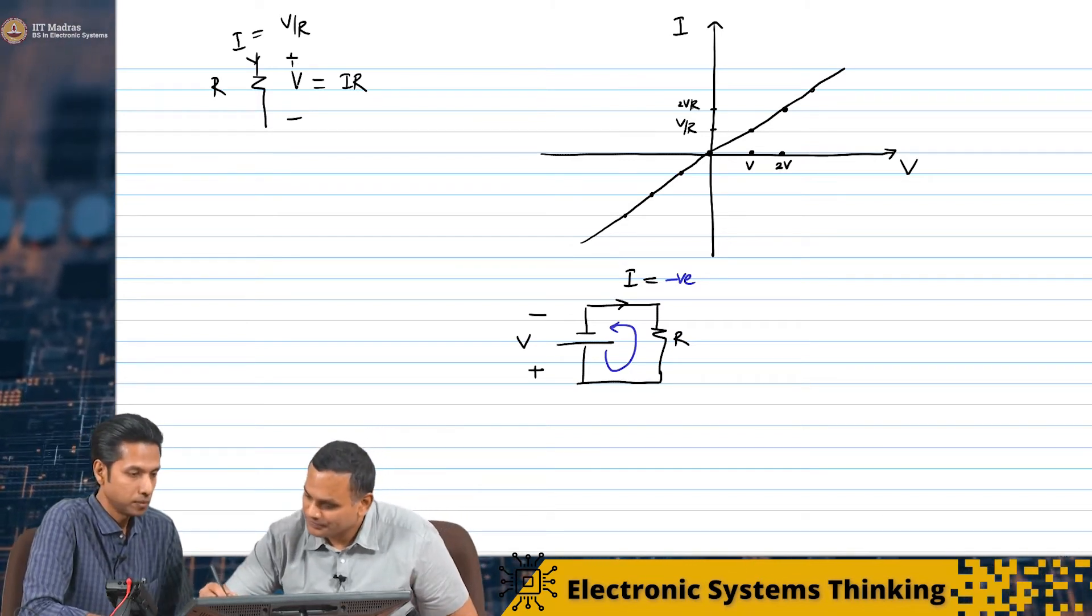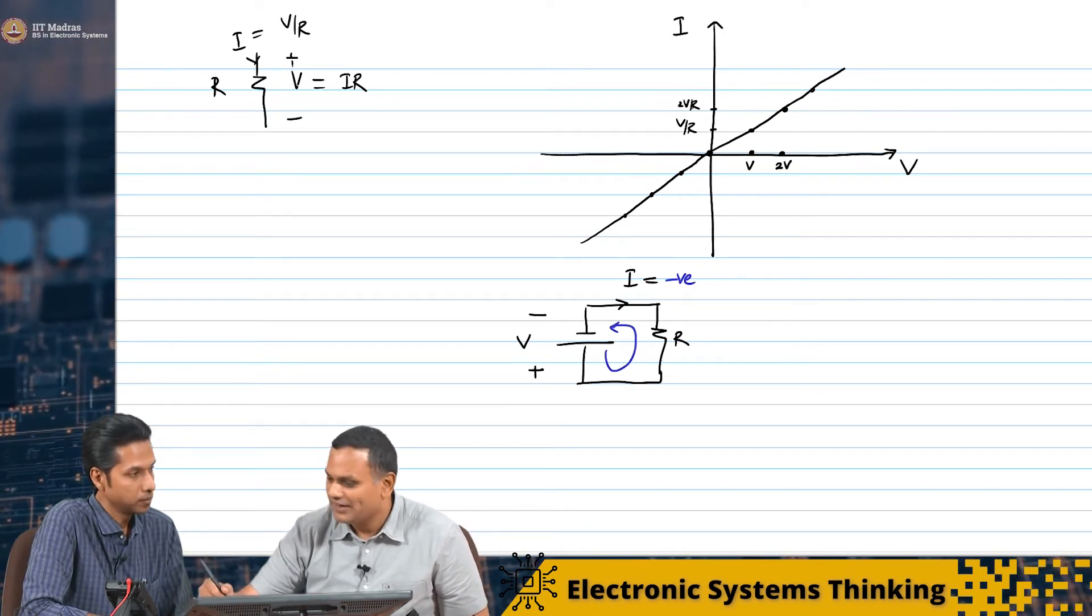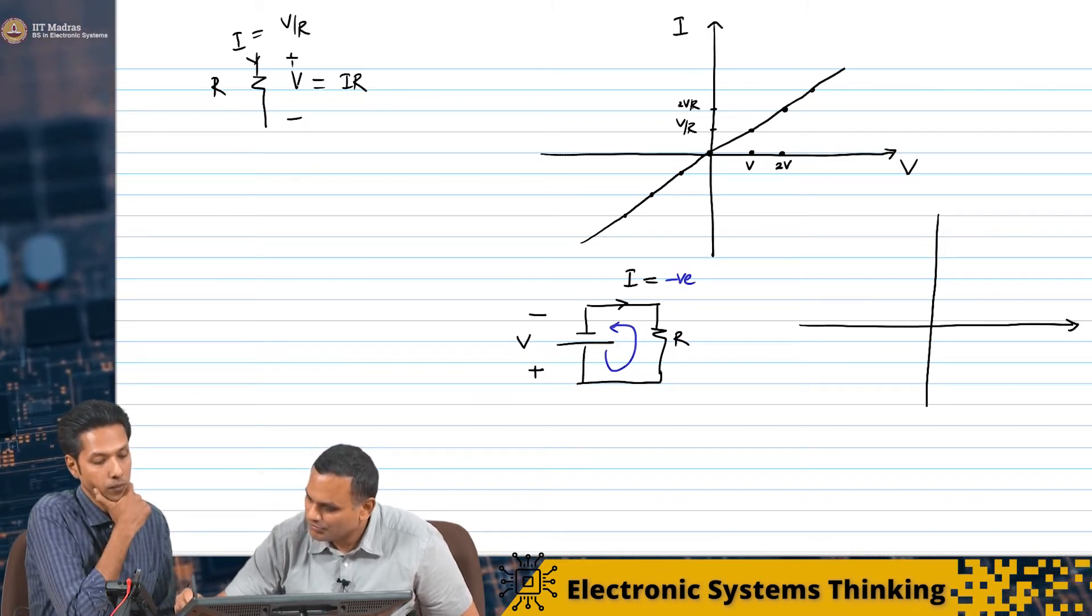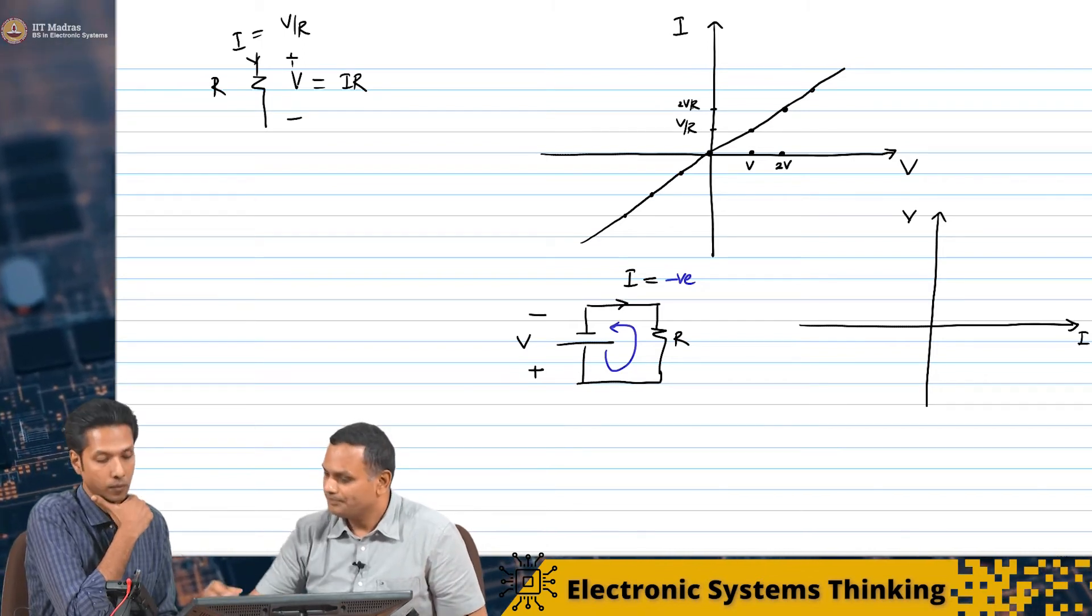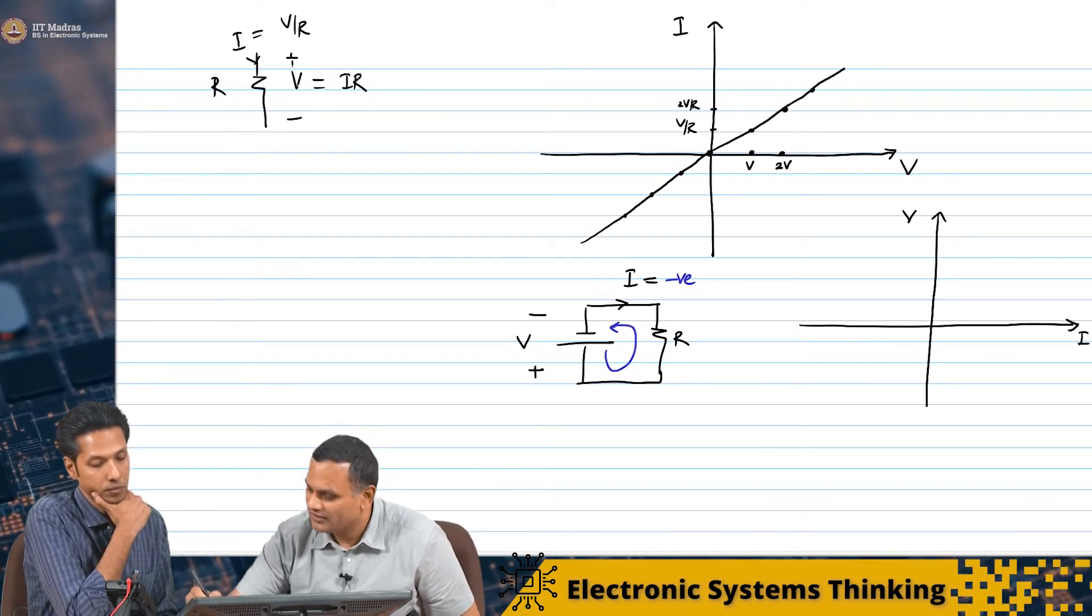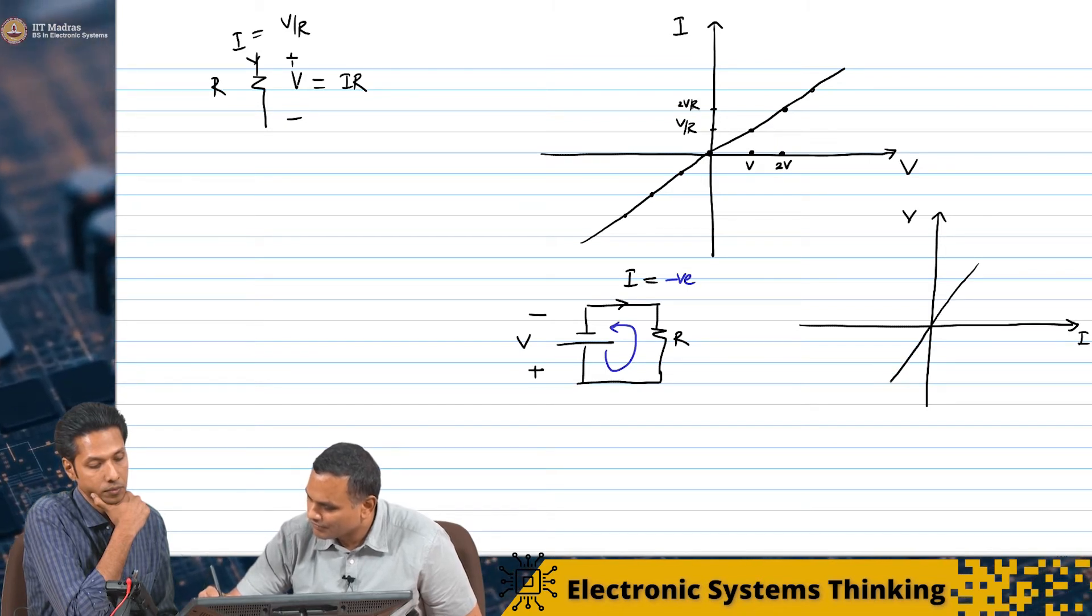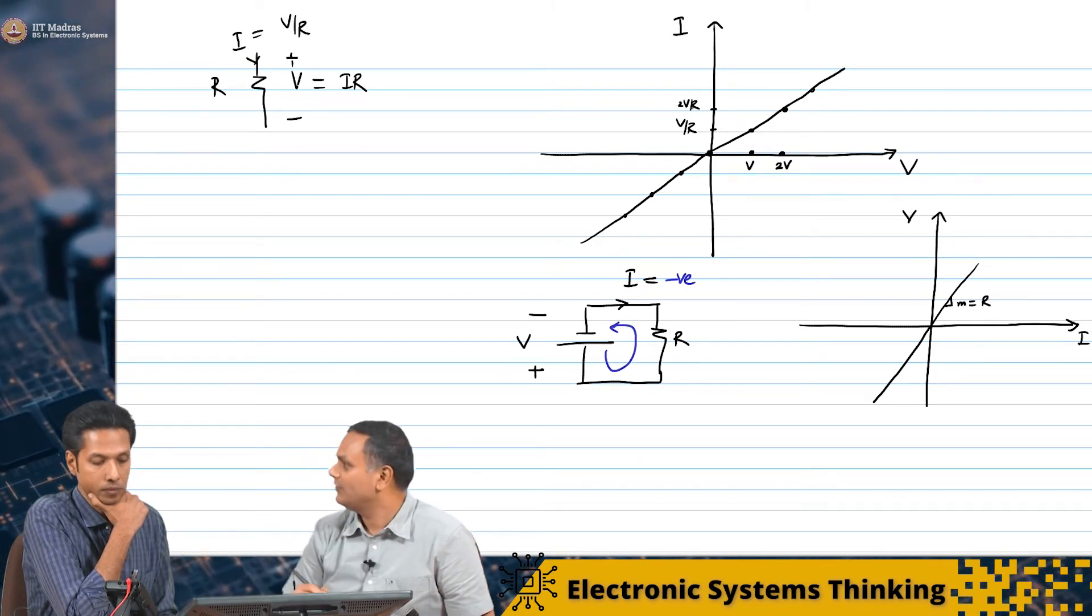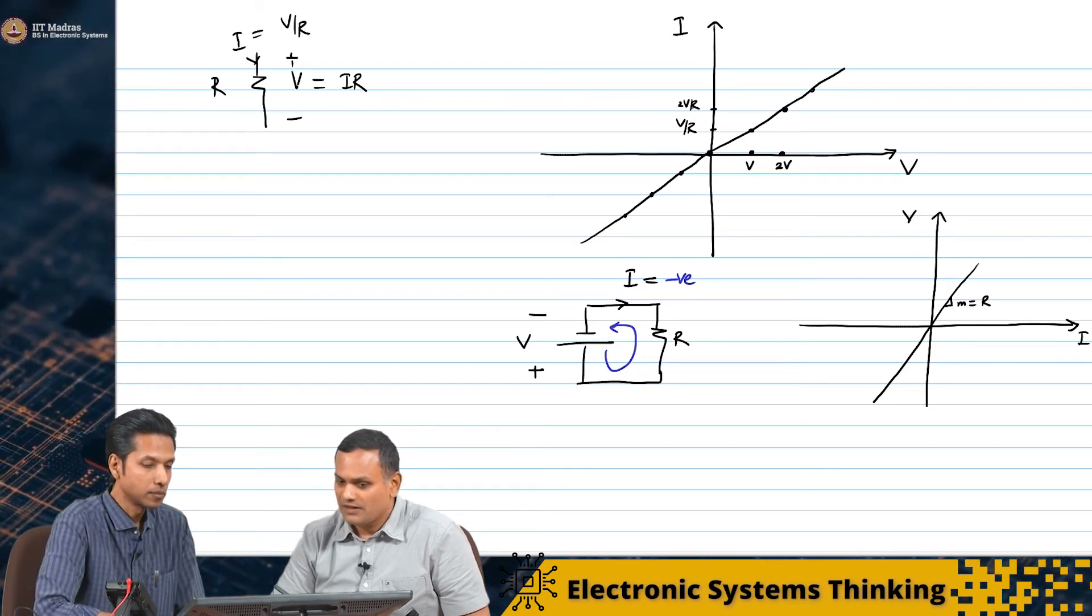I'll draw it right here. If I were to plot voltage as a function of current, then we know that V is nothing but I times R. The slope of the curve will directly give you the resistance.